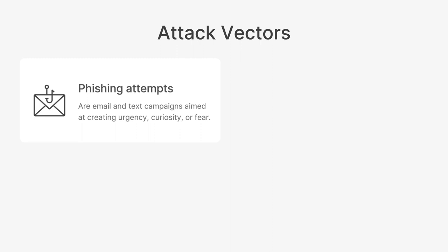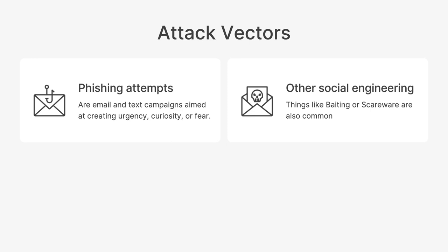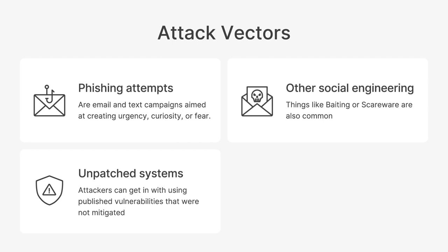Other common social engineering attempts include baiting users or using scareware. Other attack vectors include using critical vulnerabilities known to these actors on unpatched systems, which is why it's so critical to patch your systems when security patches come out. You need to stay up to date.